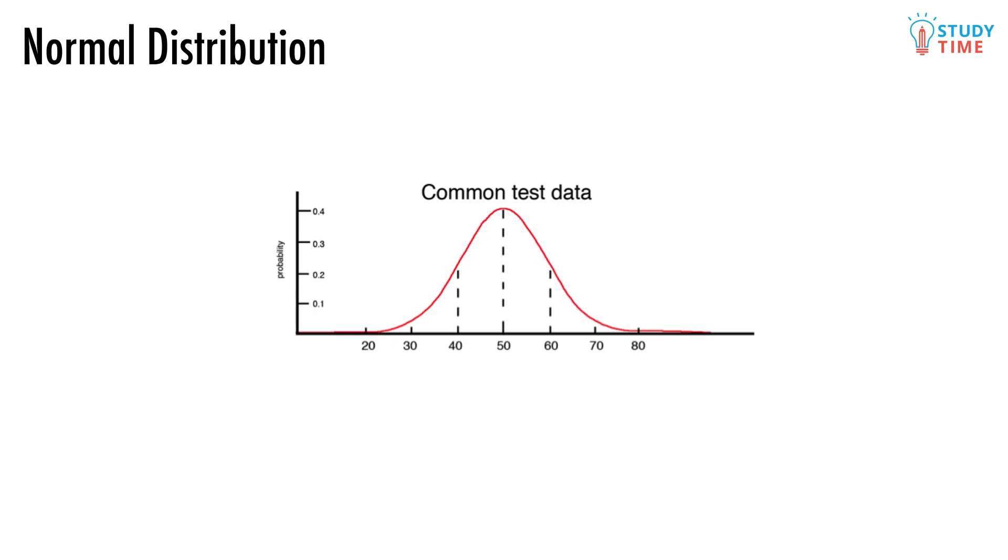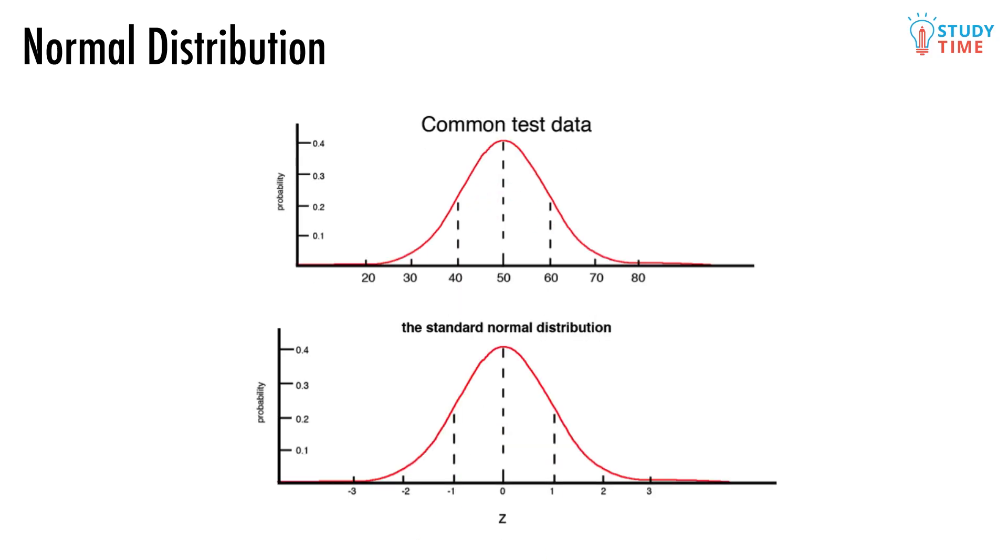Because the exact numbers on the normal distribution are always going to depend on what situation we're looking at, we use something called the standard normal distribution. What's changed here? Well, the shape of the graph is identical, of course.